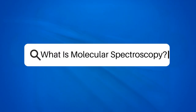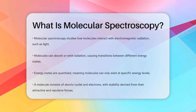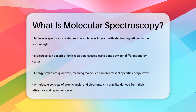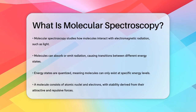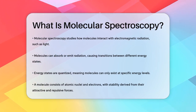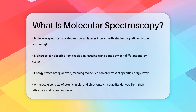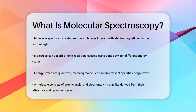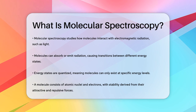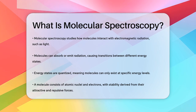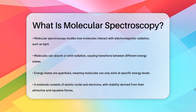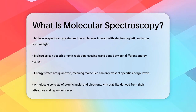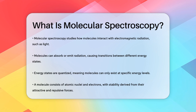What is molecular spectroscopy? Have you ever wondered how scientists figure out the exact structure and composition of molecules? The answer lies in a fascinating field called molecular spectroscopy — the study of how molecules interact with electromagnetic radiation, like light. When molecules absorb or emit this radiation, they move between different energy states. These energy states are quantized, meaning they can only be at specific levels, not anywhere in between.